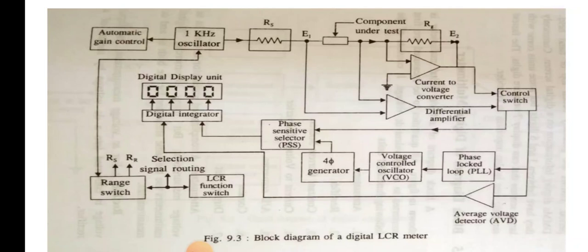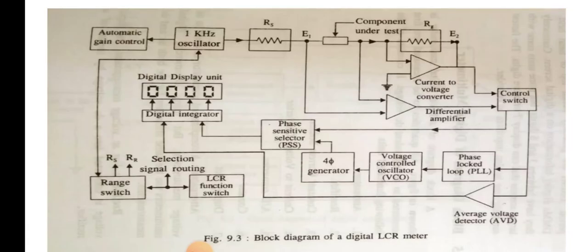In summary, the LCR function switch selects which parameter to measure. A one kilohertz oscillator with automatic gain control generates the test signal, which is applied to the component under test through resistor RS. A voltage E1, proportional to the applied voltage, is developed across the component.